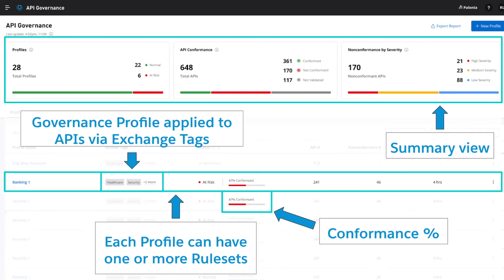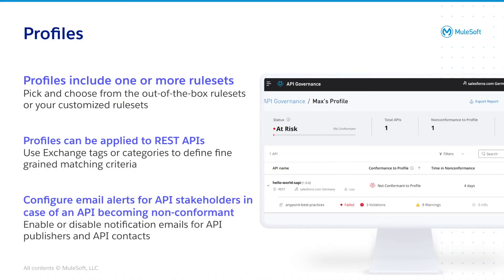We've seen the summary view, let's now look a bit more into the profiles. Depending on how you want to structure your best practices which will be automatically enforced and checked against, you can create multiple different profiles. You might want to create different governance profiles to align with the different requirements from different business units or projects, or simply to reflect the different levels of API-led where each layer could reflect a different profile. But you're completely free on how you want to structure and create governance profiles.